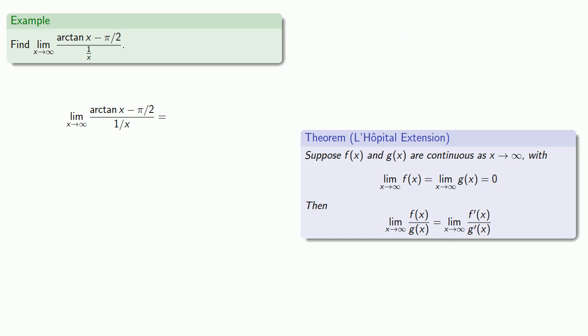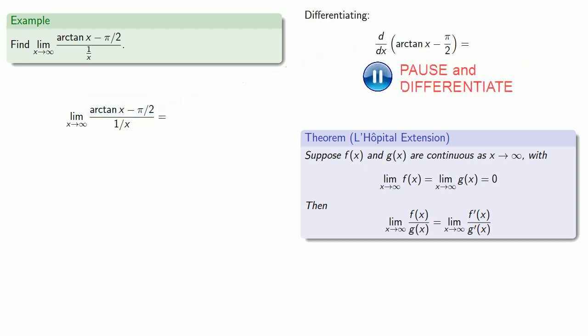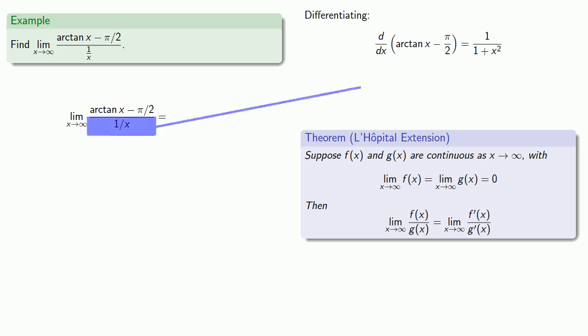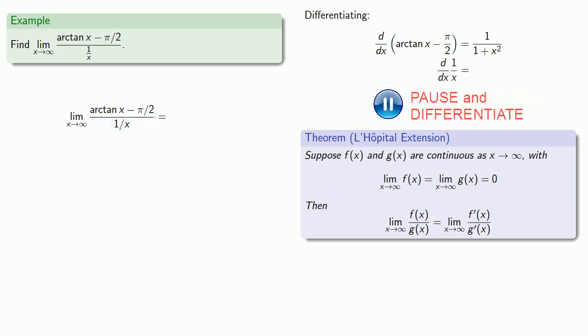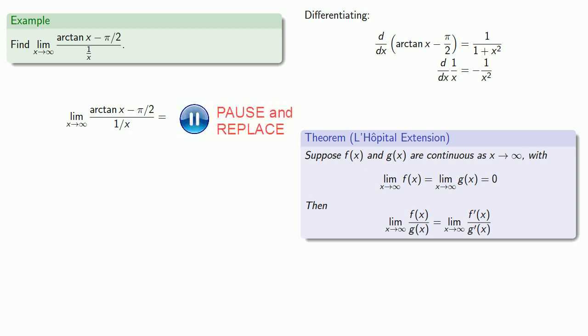We'll find the derivative of the numerator, and this allows us to replace the numerator and denominator of our original limit with a new numerator and a new denominator. Keeping in mind that this does not actually find a limit — it just finds something that's equivalent to it.